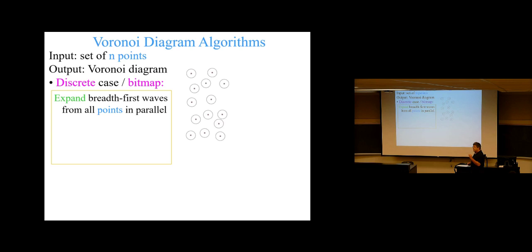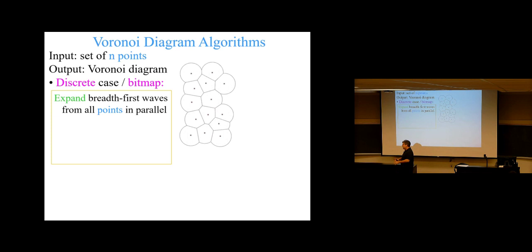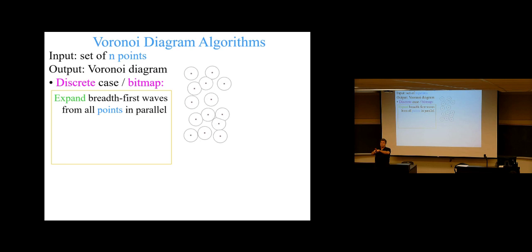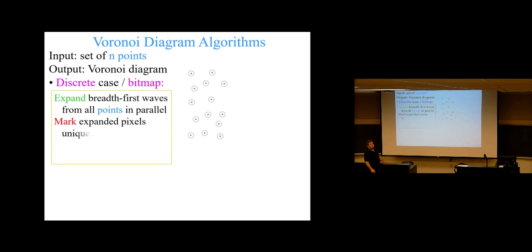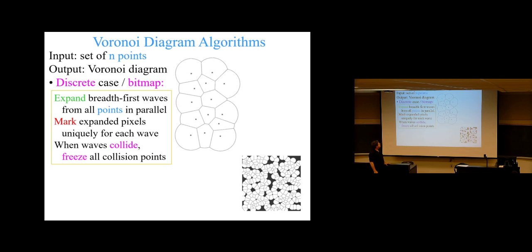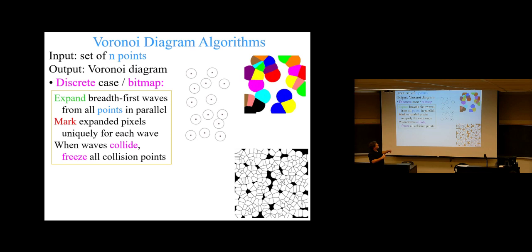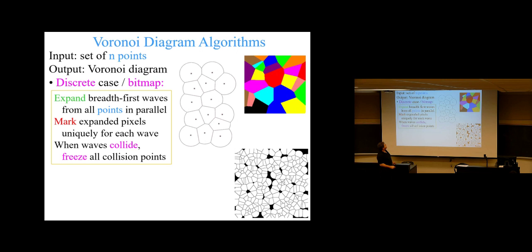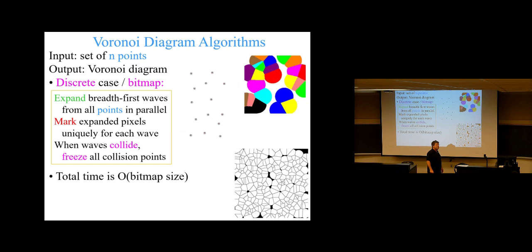Starting at all the points given to you in the bitmap, you start marking all the points by an expanding wave front from each point. When wave fronts meet, freeze the points there and stop the expansion where two different wave fronts collide. Then freeze the expansion right there, but keep expanding everywhere else. Soon enough, you'll have the Voronoi regions marked out in the bitmap, each bit marked with the index of the originating point. This works nicely for bitmaps.